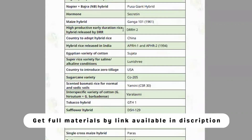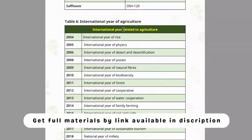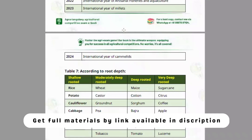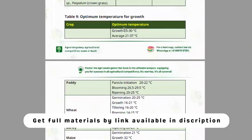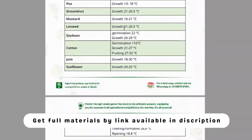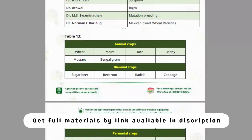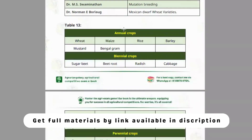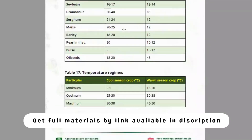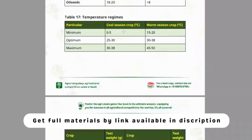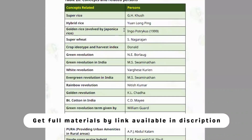Tables cover first hybrids in agriculture, important firsts, international years of agriculture, root types, plant growth habits, salt-tolerant crops, optimum temperature for growth of different crops, crop products, seed multiplication ratios, scientists and their crops, annual and biennial crops, direct-seeded and transplanted crops, moisture percentage at harvest and storage, and test weight of different crops.